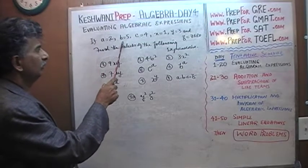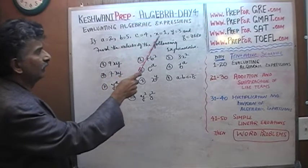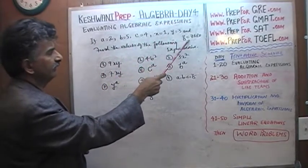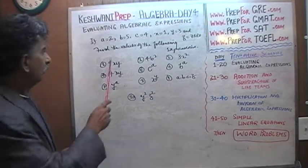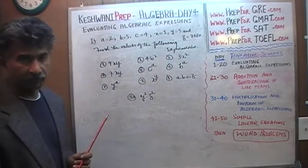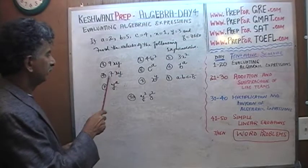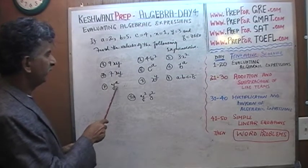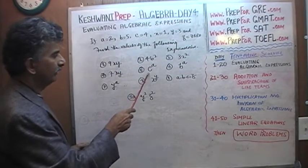If a equals 2, b equals 5, c equals 4, x equals 1, y equals 3, and z equals 0, what are the values of the following expressions: 9xy, 7xy, y raised to a, 4b squared, c raised to a,